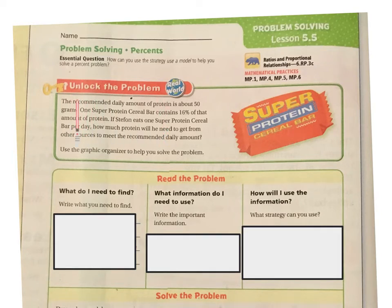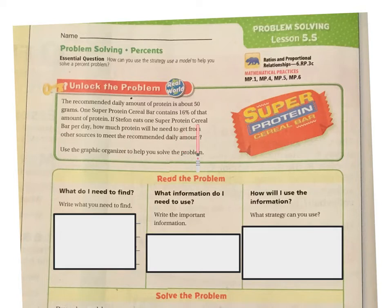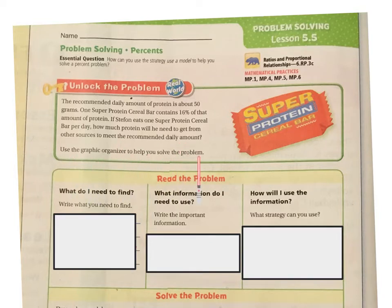Unlock the problem. The recommended daily amount of protein is about 50 grams. One Super Protein cereal bar contains 16% of that amount. If Stefan eats one Super Protein cereal bar per day, how much protein will he need to get from other sources to meet the recommended daily amount? Use the graphic organizer to help you solve the problem.